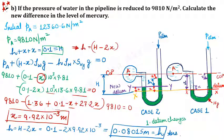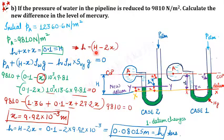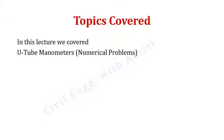So this is my answer — 0.08015 meters. In this question, remember that as much as the liquid is depressed on one side, it rises equally on the other, because pressure decreased. We find the changes relative to the old and new datum, form the equation, solve for x, then find h. More numericals of this type will be done in the next lecture. Please especially try to understand and solve the last question again. Thank you.